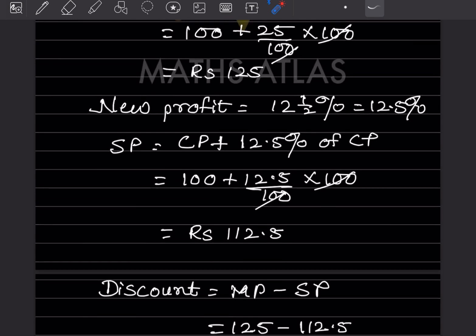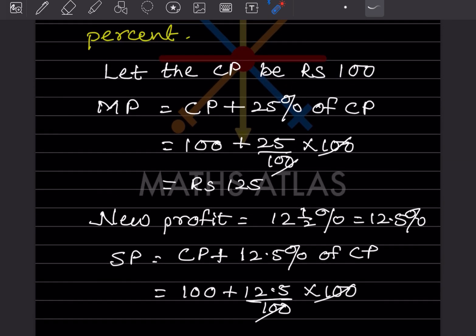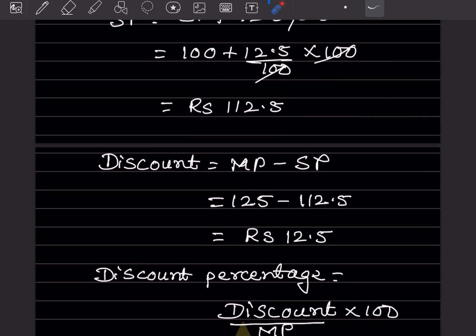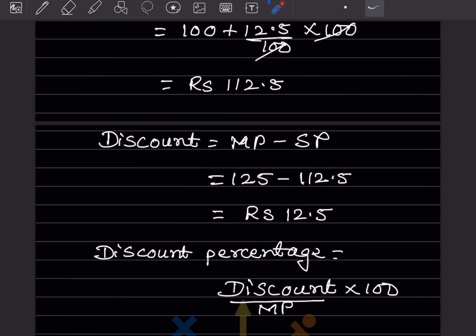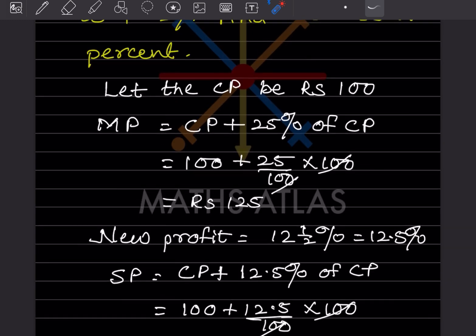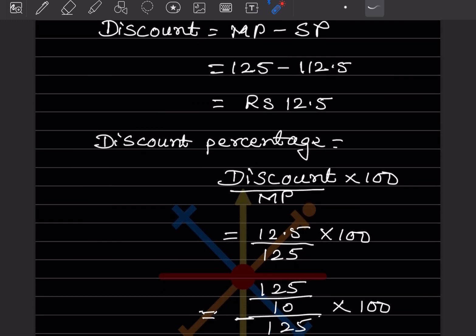Discount is mark price minus selling price. Selling price is 112.5 and mark price is 125. So discount is 125 minus 112.5, which equals 12.5. Discount percentage is discount divided by mark price into 100. The discount is 12.5 and the mark price is 125.